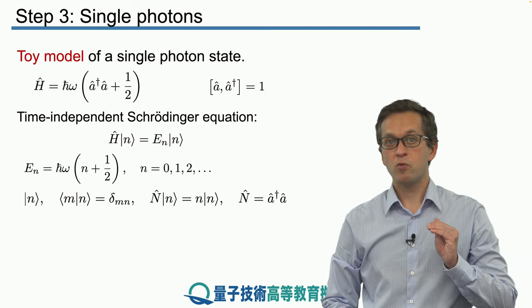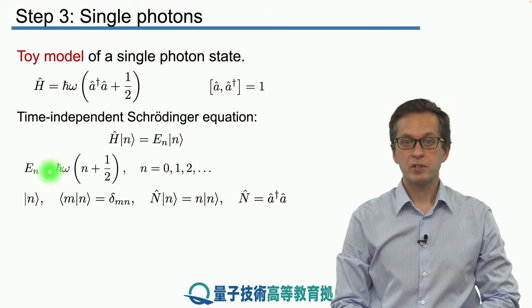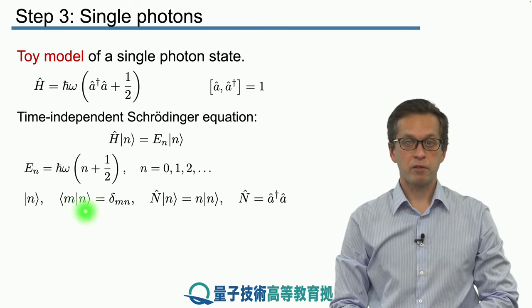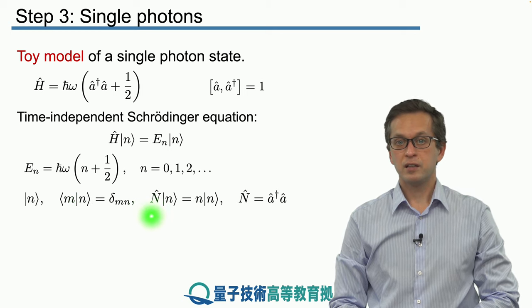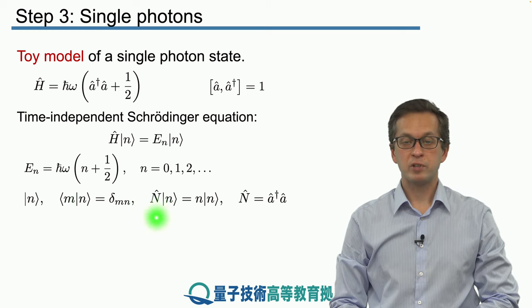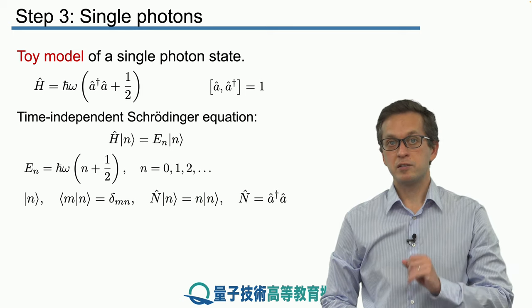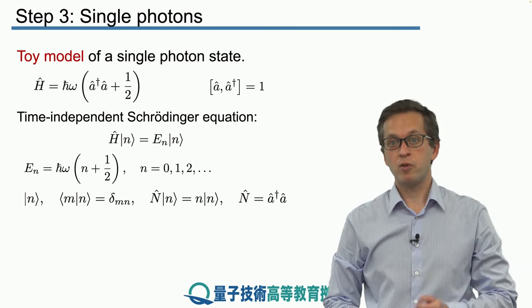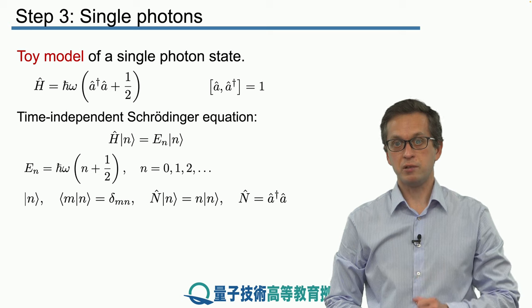The energies are given here, the n's can be only 0, 1, 2. The number states form an orthogonal basis, and the number operator operating on a number state just returns the n associated with the number state, so the number of photons in the field in that particular mode.